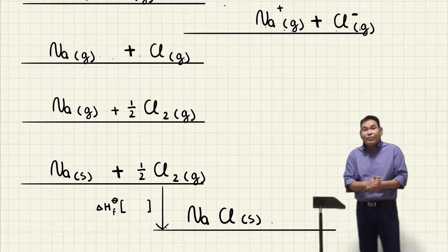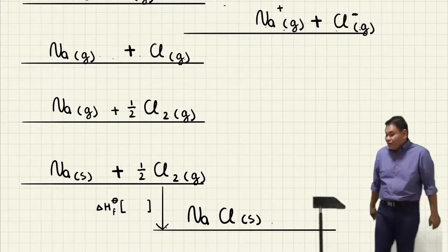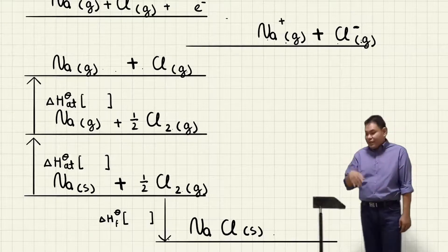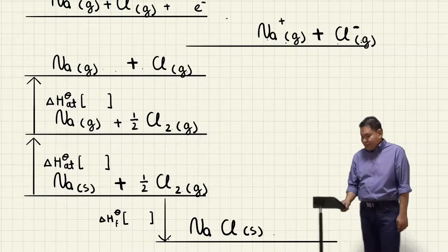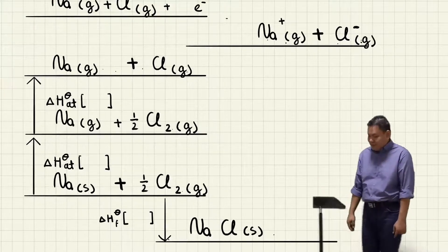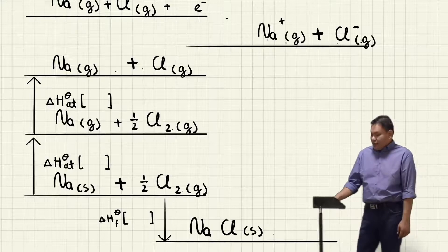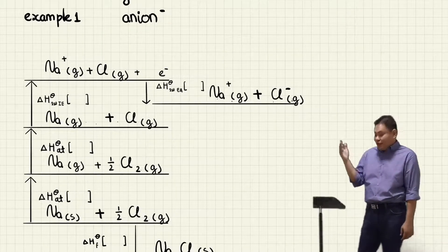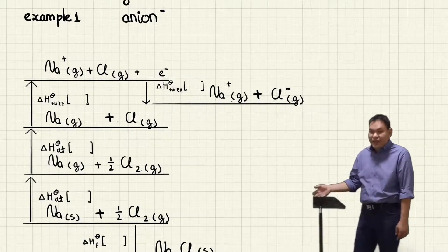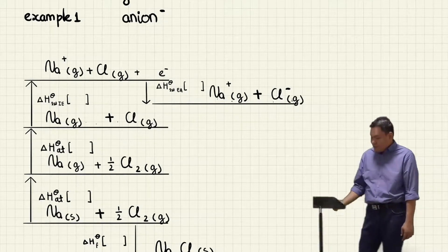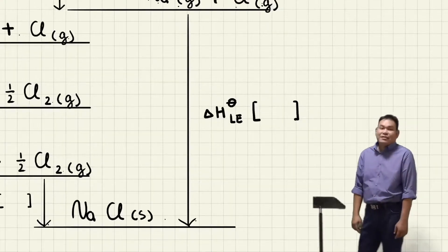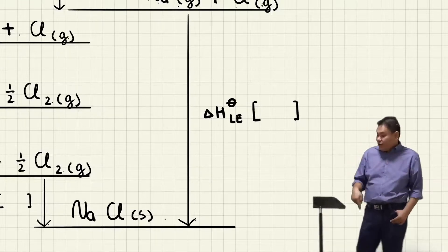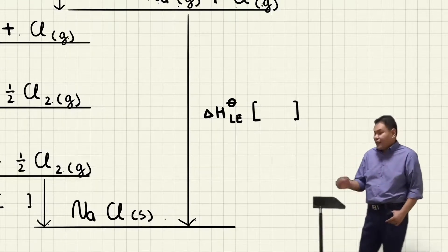Next we draw two arrows for delta H atomization upwards, which we will fill in later. Then two more arrows for ionization energy pointing up, and the first EA pointing down. The last part is of course the lattice energy pointing down — a very exothermic reaction.